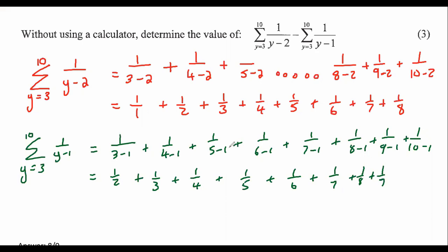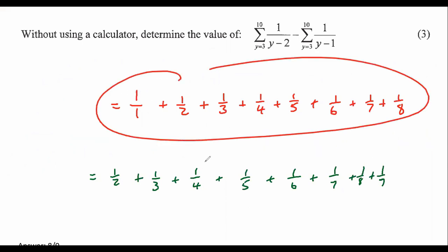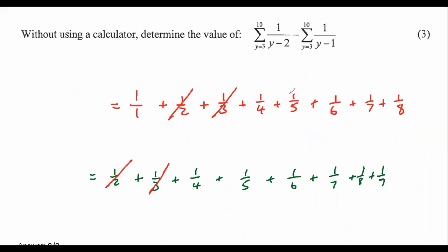Now what they want us to do is they want us to take the top expression, which is the one in red, and they want us to subtract the green. So they want us to take this one minus this one. Now what you should identify is that the halves are going to cancel when you minus them. The thirds are going to cancel, the fourths, the fifths, the sixths, the sevenths, and the eighths. And so this always happens. I've seen so many questions like this. You're always going to be left with the first number and the last number. It's usually like that.